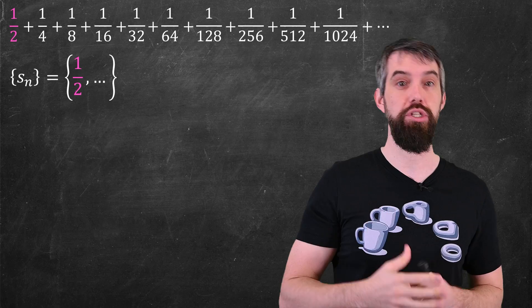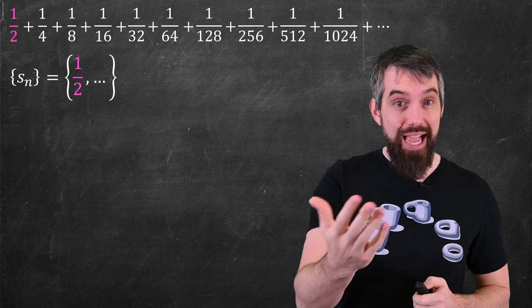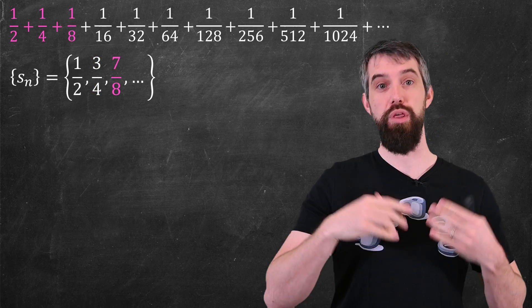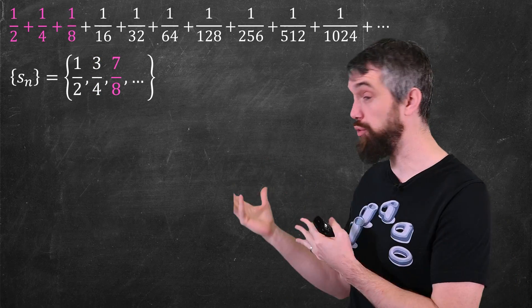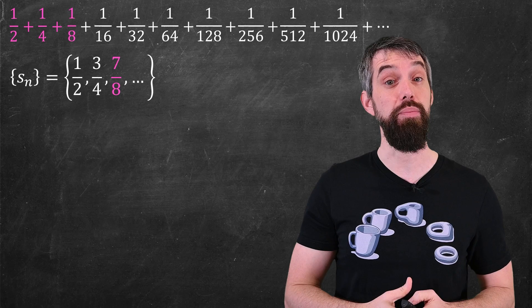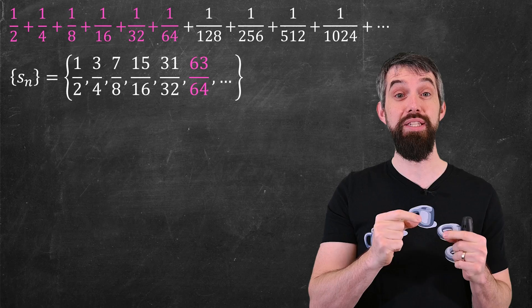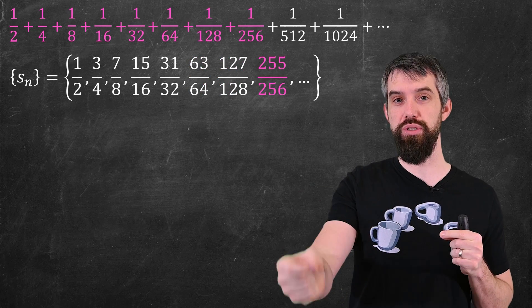Then the second partial sum is the sum of one half and a quarter, which is three quarters. The third partial sum is the sum of the first three terms, seven eighths, and you can keep going. That is, if you have a series, you can always create a sequence of partial sums.